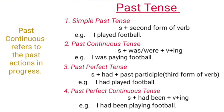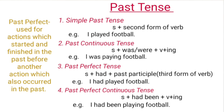And example is 'I played football.' Past continuous tense refers to the past actions in progress. Its structure is Subject plus 'was' or 'were' plus verb plus -ing.